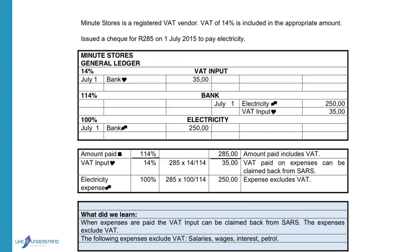The VAT will be 14%. So 285 times 14 over 114 will give us the VAT as 35 Rand. The electricity expense that will reduce our profits will be the 100%. So 100 over 114 will give us 250 Rand.